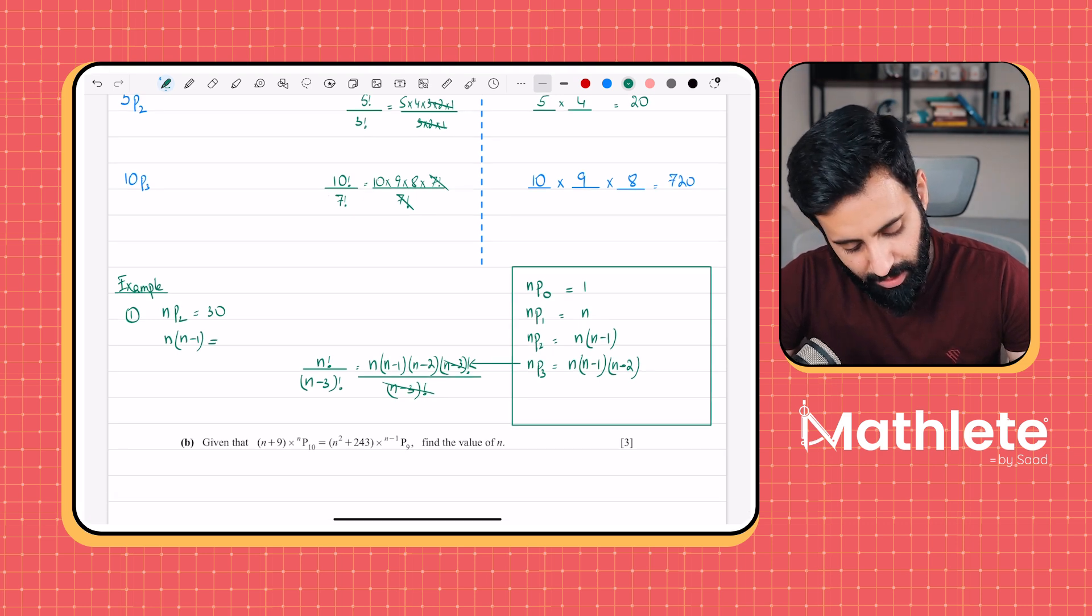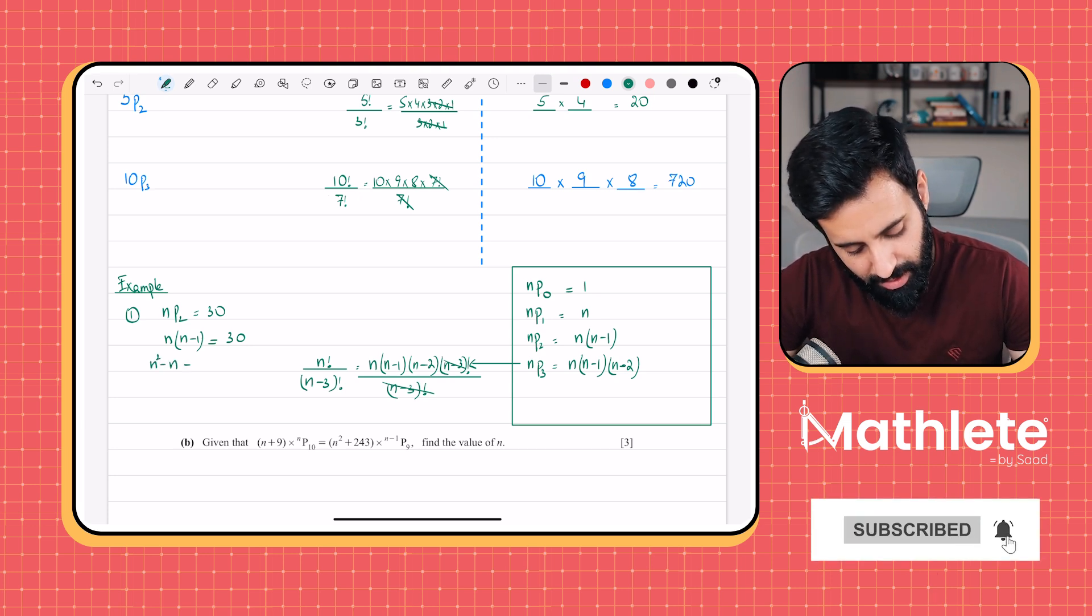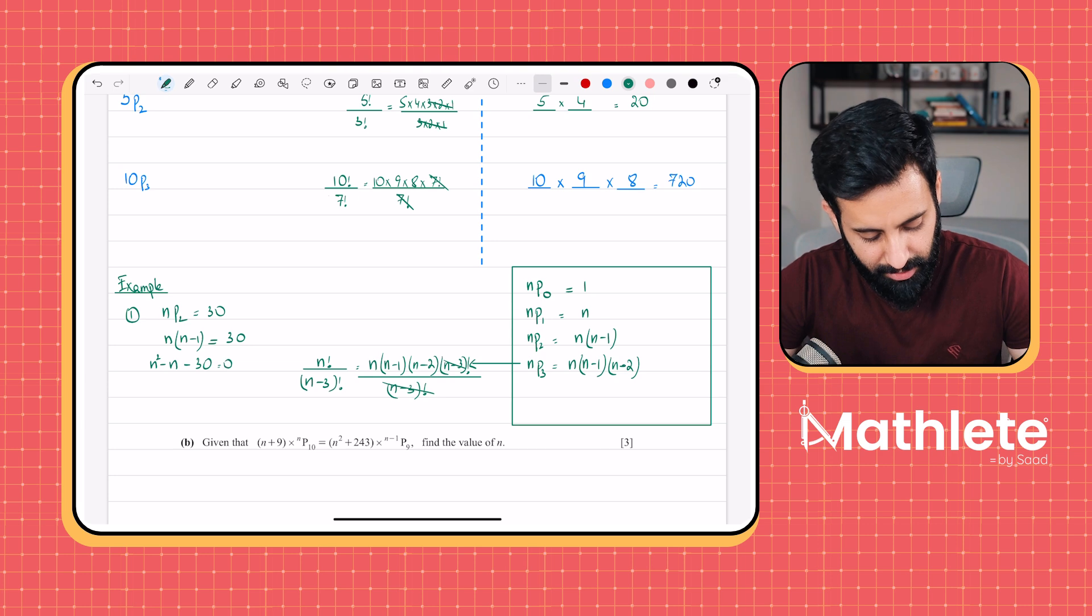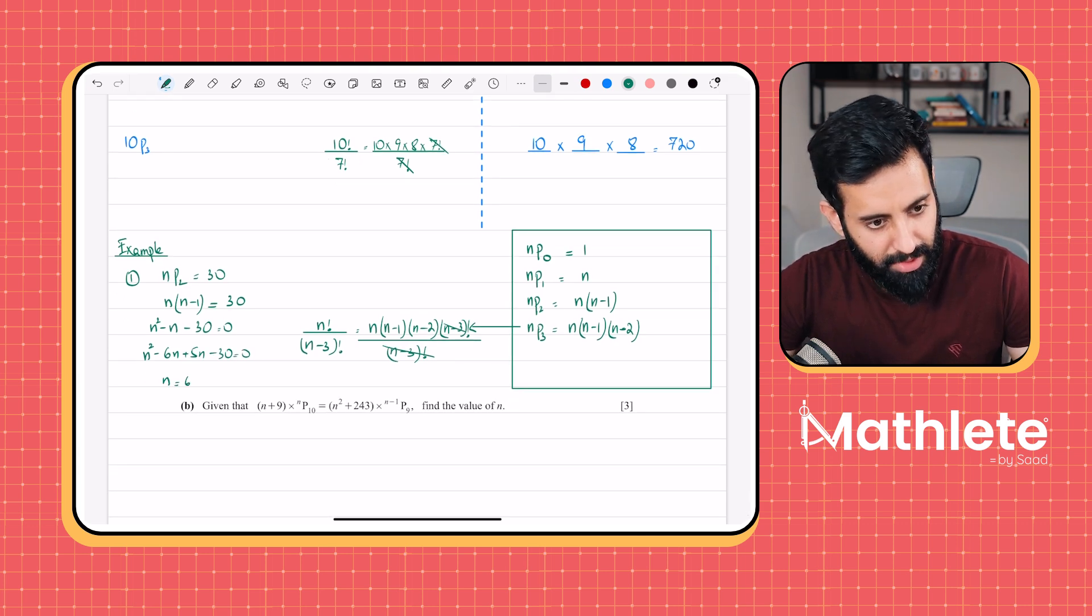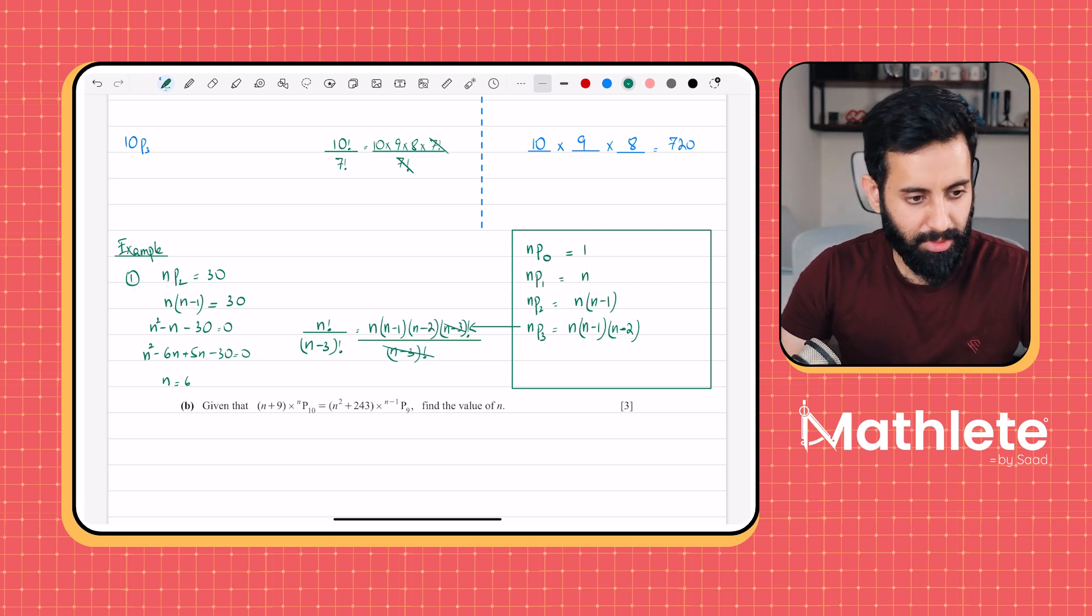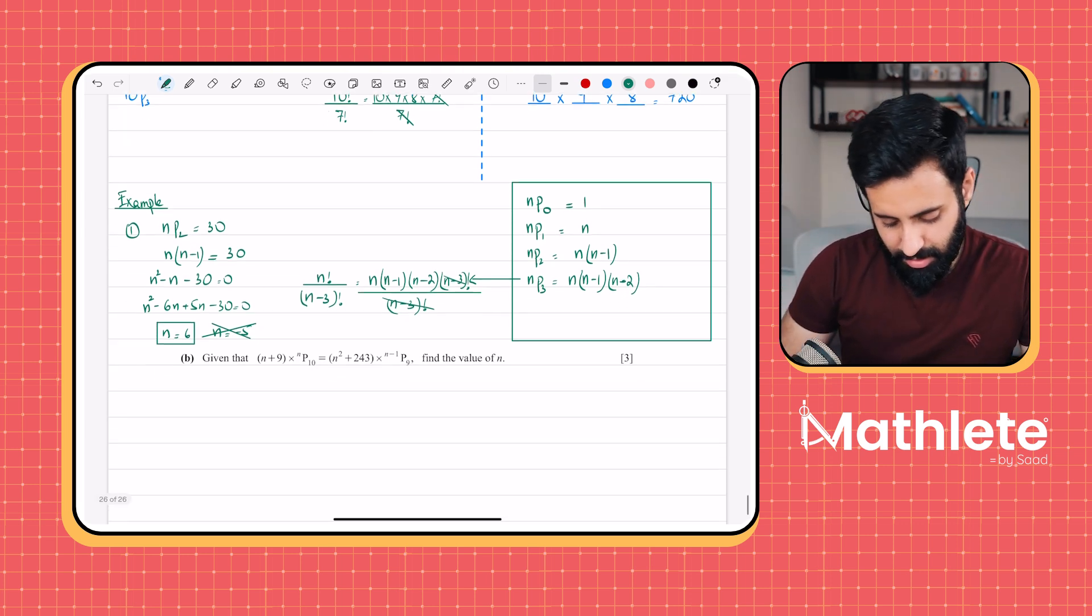So NP2 means N into N minus 1 is equal to 30. So if we expand this, we have N square minus N. Let's move 30 across the equals to sign as well. We can solve this using middle term breaking. So it's going to be N square minus 6N plus 5N minus 30. And then when you solve this, you will get one value of N which is equal to 6, and the other value of N which is equal to minus 5. Obviously, you can't have a negative value of N. So therefore, the correct answer is 6.